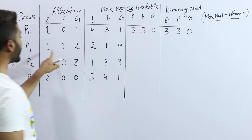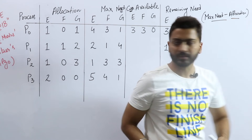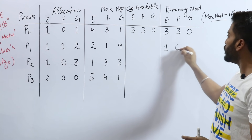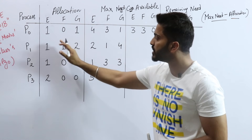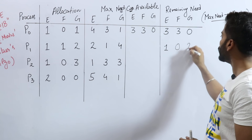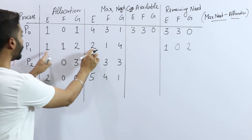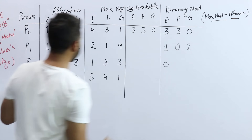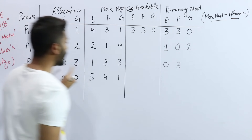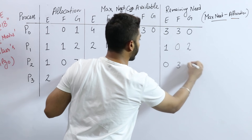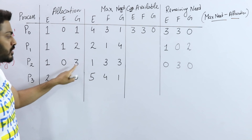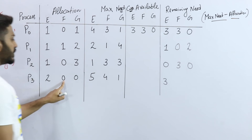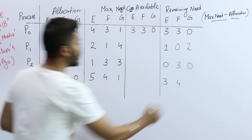Continuing the remaining need calculations: For P1: E = 2 − 1 = 1, F = 2 − 1 = 1 — wait, carefully: F = 2 − 1 = 1, G = 4 − 2 = 2, so P1 remaining need is (1, 1, 2) — actually recalculating: P1 is (1, 0, 2) based on the values. For P2: E = 1 − 1 = 0, F = 3 − 0 = 3, G = 3 − 3 = 0. For P3: E = 5 − 2 = 3, F = 4 − 0 = 4, G = 1 − 0 = 1.